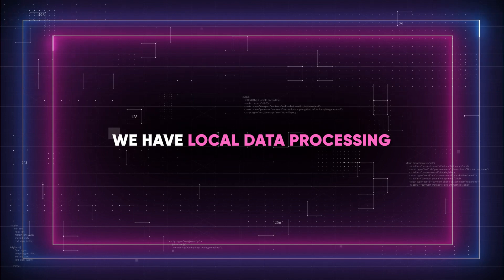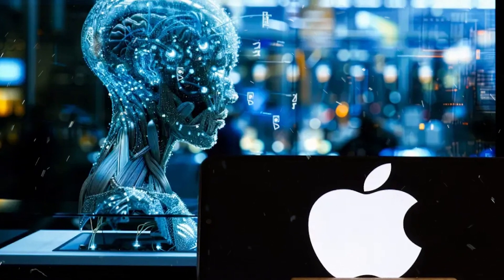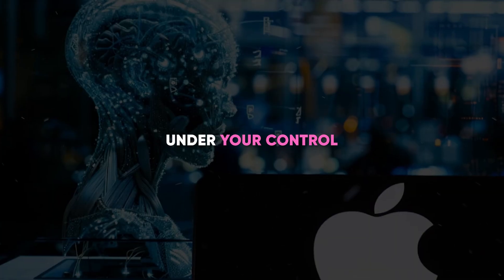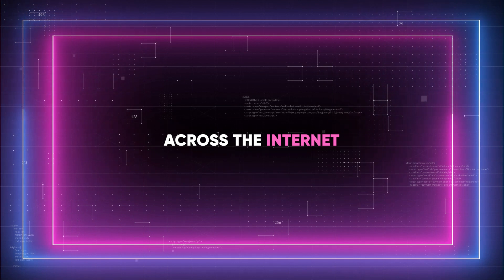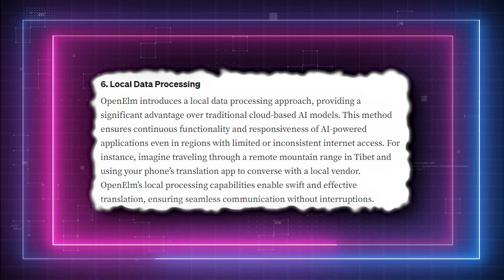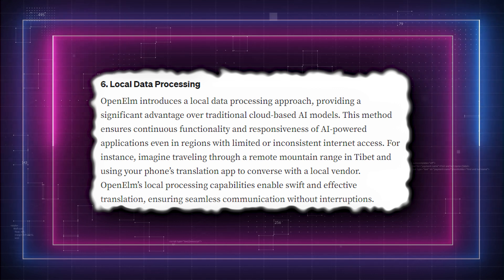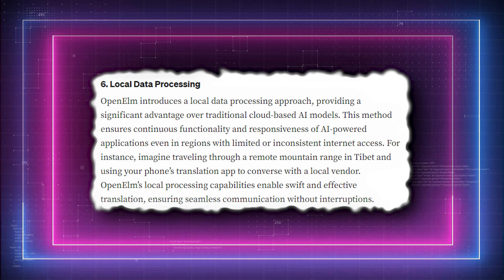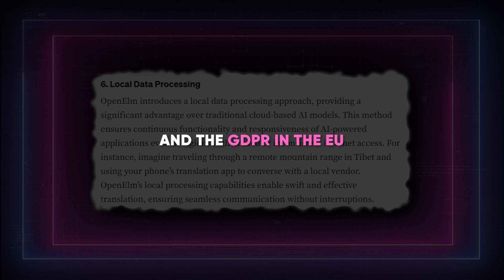At number six, we have local data processing. By operating directly on your device, Open ELM ensures that sensitive and private data remains under your control, eliminating the need to transfer large amounts of data across the internet. This localized processing not only reduces the risk of data breaches and privacy concerns, but also offers significant benefits in terms of data sovereignty and compliance with various data protection regulations, like the CCPA in California and the GDPR in the EU.